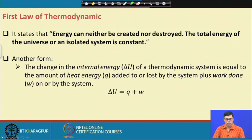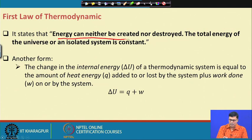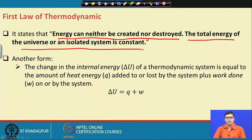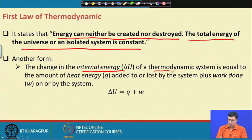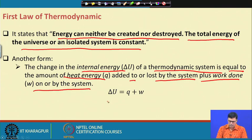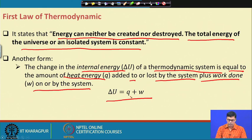The first law of thermodynamics states that energy can neither be created nor destroyed; the total energy of the universe or an isolated system is constant. Alternatively, the change of internal energy of a thermodynamic system equals the heat energy added to or lost by the system plus the work done on or by the system. Mathematically: ΔU = q + w, where q is heat energy change, w is work, and ΔU is the change in internal energy.